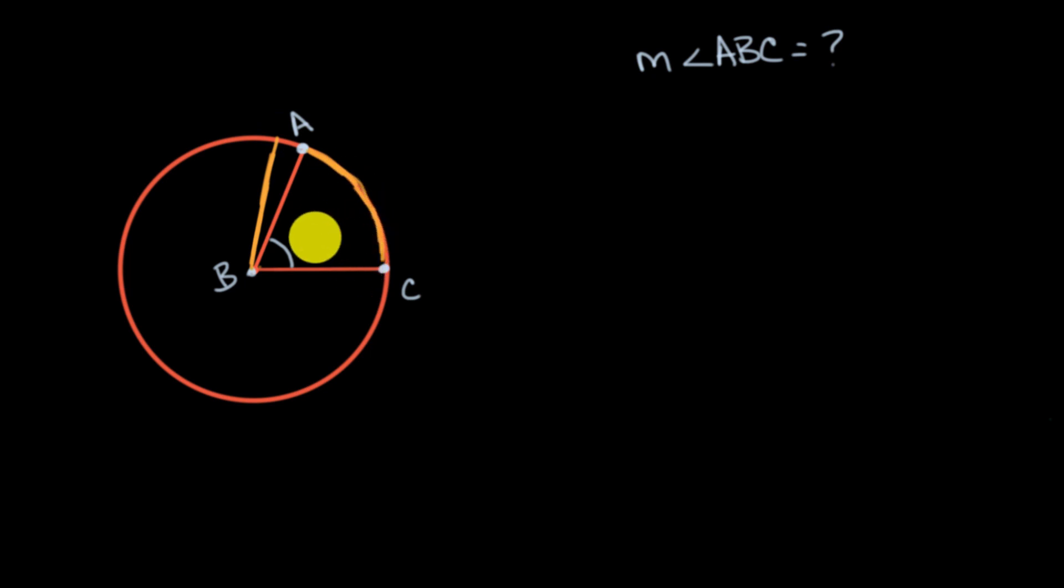So should we define the measure of an angle like this as being equal to the length of the arc that it subtends? Is this a good measure? Well, some of you might immediately see a problem with that. Because the length of the arc that is subtended is not just dependent on the angle, the measure of the angle. It also depends on how big of a circle you're dealing with. If the radius is larger, then you're gonna have a larger arc length.